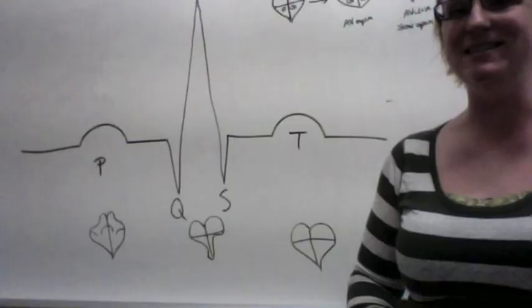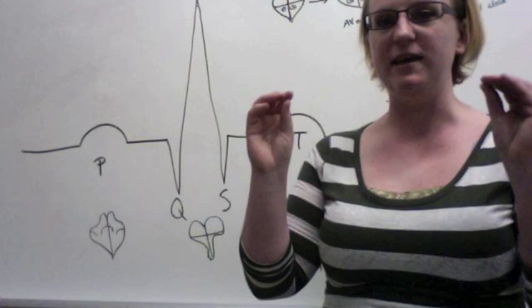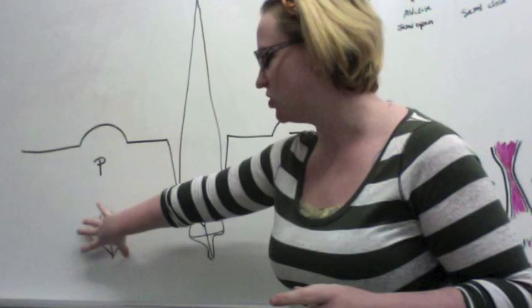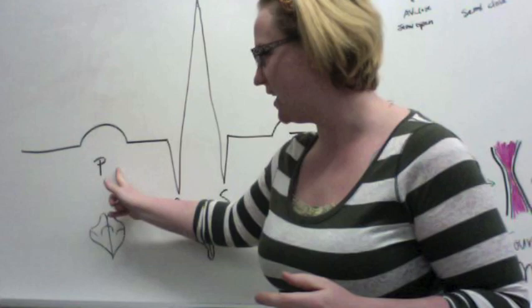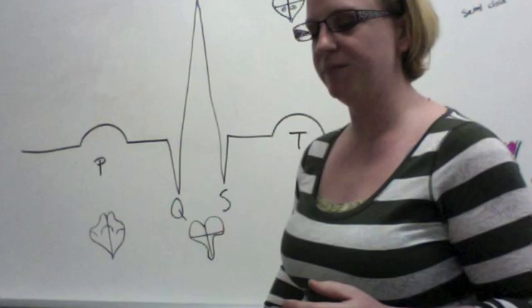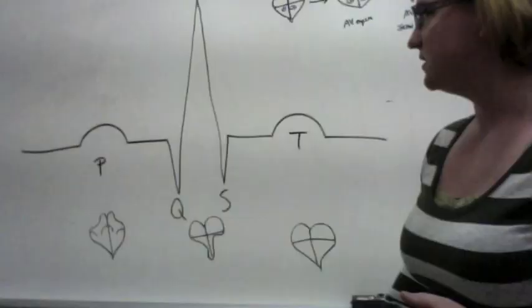The P wave represents depolarization of the atria. That means each of those cardiac muscle cells undergoes an action potential — the electronics of the heart change. Your atria are squishing, that corresponds with an electrical change, and that's the P wave. Atria squishing or depolarizing — that's the P wave.